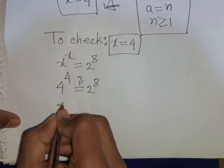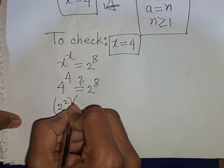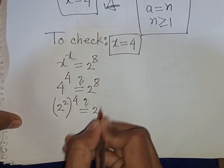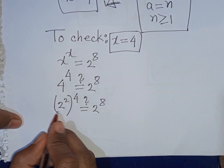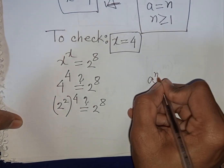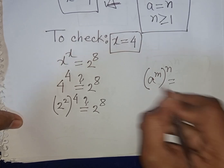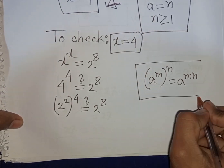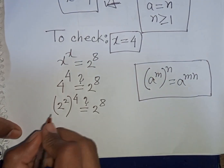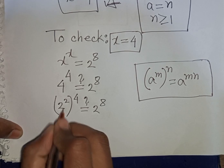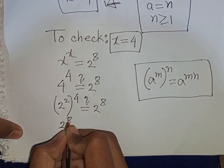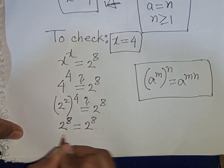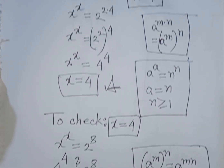This 4 can be written as 2 power 2, then bracket power of 4, then is equal to 2 power 8. Here I can apply the exponential rule that a power m bracket power n is equal to a power of m times n. So according to this formula I can write 2 power of 2 times 4, that means it will be 8 — so 2 power 8 is equal to 2 power 8. That means left side is equal to right side.